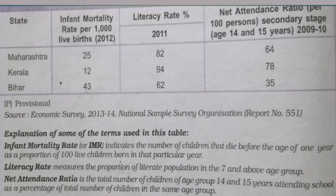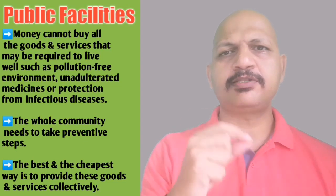Now let us look at the net attendance ratio at secondary level, that means the age group of 14 and 15. Net attendance ratio is the total number of children of the age group 14 and 15 attending school as a percentage of total number of children in the same age group. In Maharashtra the net attendance ratio is 64 whereas in Kerala it is 78. So in this aspect also Kerala is way ahead of Maharashtra. The conclusion is that though the per capita income of Maharashtra may be higher, the other essential services required to live well are not as good as in Kerala. This gives us an idea that money in your pocket cannot buy you all the essential services required to live well.